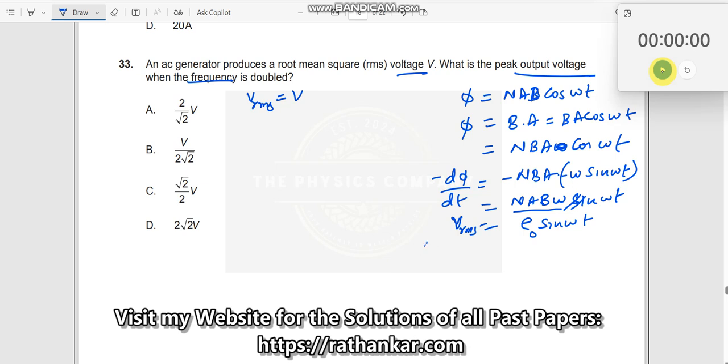Now, if your omega is increased, if omega is doubled, then what will happen to VRMS? VRMS will also become two times V. Why? Because omega is equal to 2 pi F. When F is doubled, omega also gets doubled. So therefore, VRMS becomes two times V.